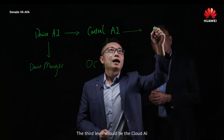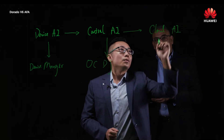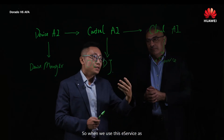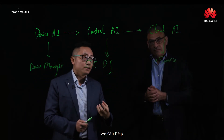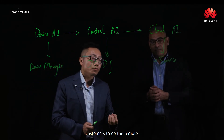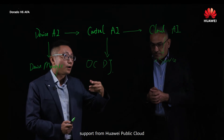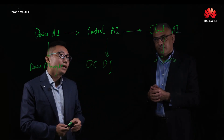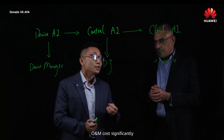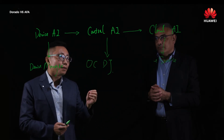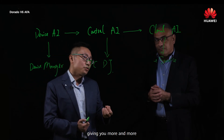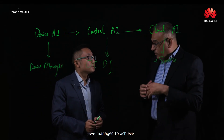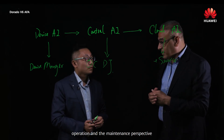The third level is Cloud AI — for the eService. When we use eService as a remote tool, we can help large organizations and customers to do remote support from the Huawei public cloud. This will trigger remote support for you as an additional service. It will also reduce your O&M cost significantly. By enabling the AI feature on the backend, eService gives you more and more efficiency when you do maintenance and O&M. By having all these, we managed to achieve system optimization from the operation and maintenance perspective.